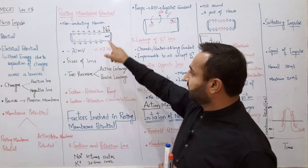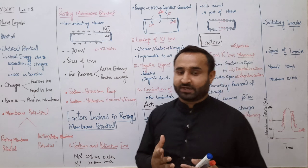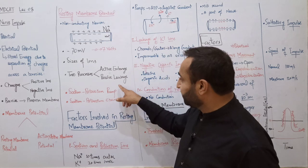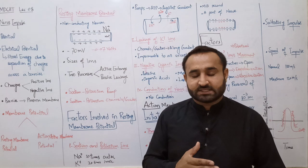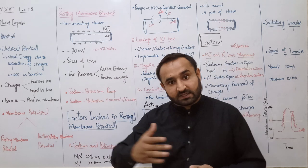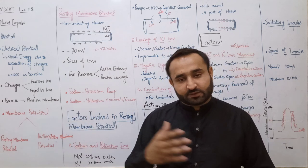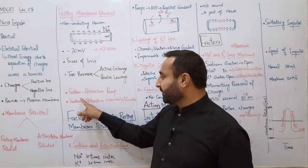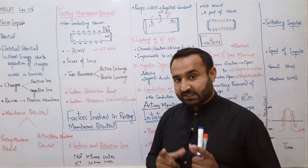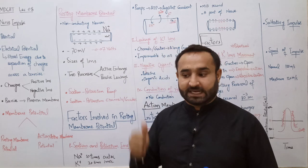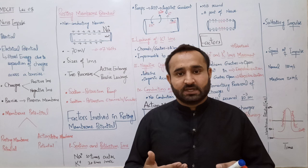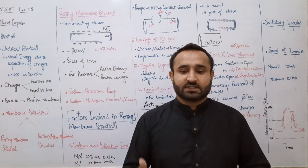Resting membrane potential کو maintain رکھنے والے دو processes ہیں - ایک active process اور دوسرا passive process۔ Active transport وہ ہوتی ہے جس کے لیے ATP energy use ہوتی ہے، جو against concentration gradient ہوتی ہے۔ Passive transport وہ ہوتی ہے جو along concentration gradient ہوتی ہے - from higher to lower - اور جس کے لیے ATP کی ضرورت نہیں۔ Nerve cell کی plasma membrane میں دو طرح کے راستے ہیں: sodium-potassium pump (active) اور sodium-potassium channels یا gates (passive/facilitated diffusion)۔